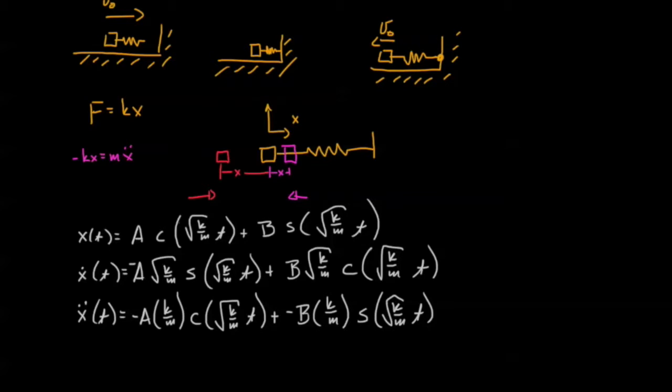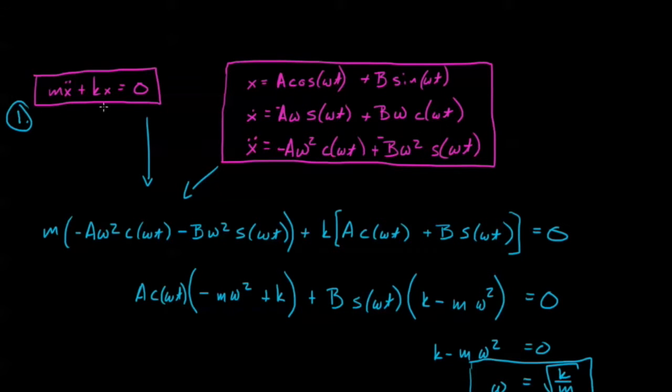So we can see in white I've put the general solution for any oscillating system. We can use the initial conditions to identify what a and b are. Now for those of you curious about where this equation comes from, let's look at the derivation.